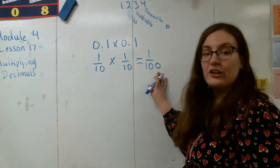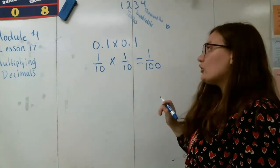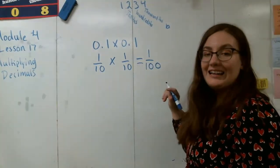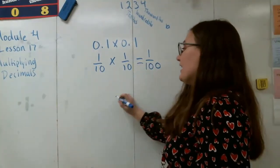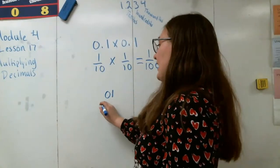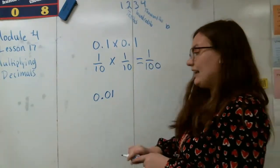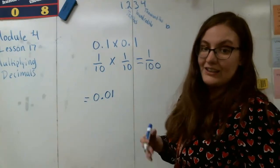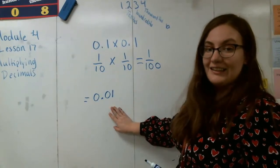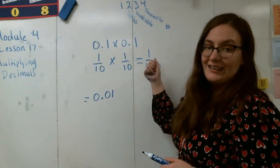Now when I take a look at this problem I don't always want to leave my answer as a fraction, so what I can do is think about what does one hundredth look like as a decimal. So if I have one in my hundredths place then I need a zero in my tenths. I need a decimal point and then I can also write a zero in my ones and this is how I'd write my final answer as a decimal. Remember one hundredth written as a fraction and one hundredth written as a decimal are exactly the same.